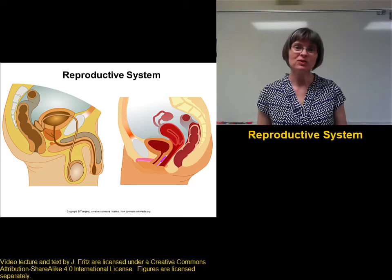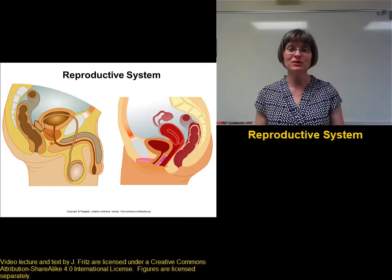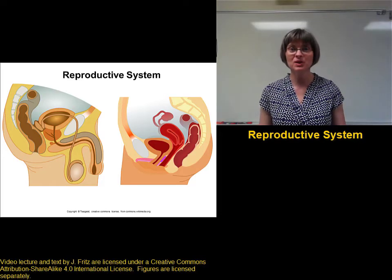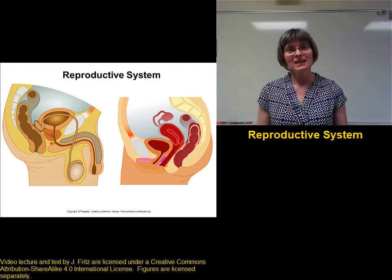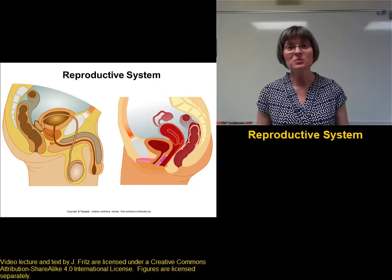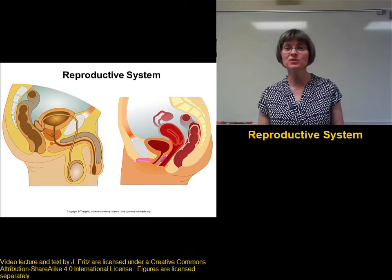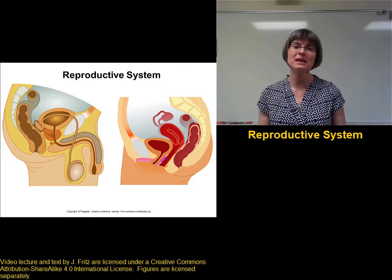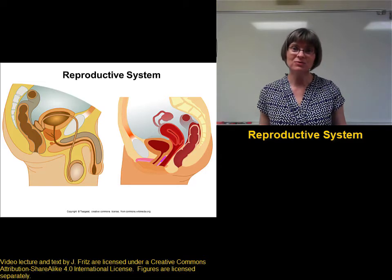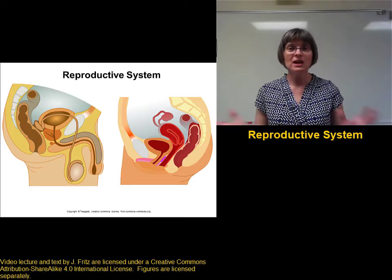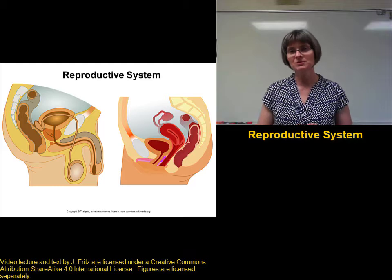The function of the reproductive system is obviously to reproduce — to make more. Since this is a human anatomy and physiology class, we're concerned with the process of making more humans. We can take the process of reproduction and break it down into a few smaller steps.